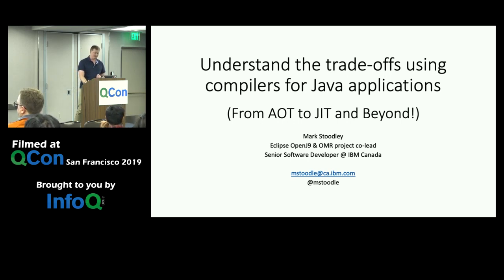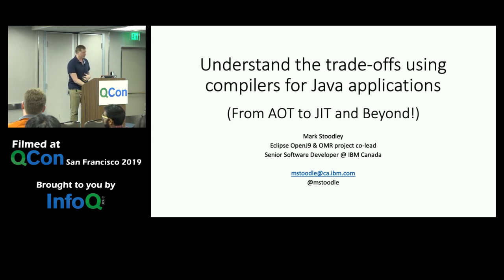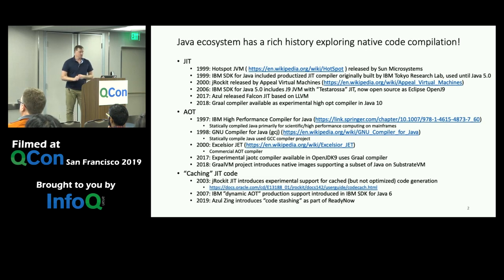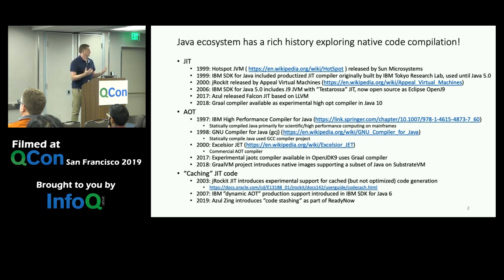The subtitle is "From AOT and Beyond." At the end of this talk, I'm going to be transitioning into an explanation of how we're at OpenJ9 starting to put different types of technologies together in order to address all kinds of different needs and do some pretty cool stuff.